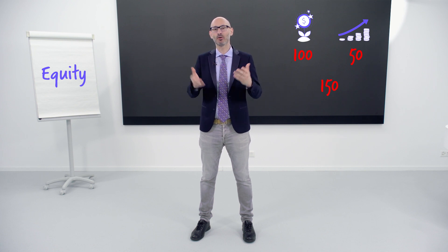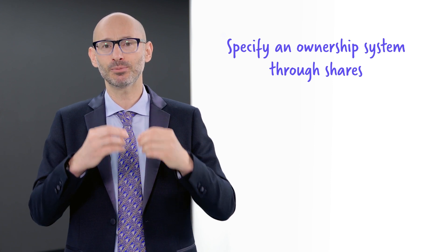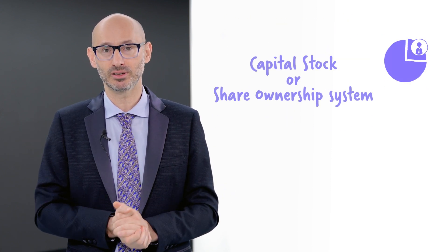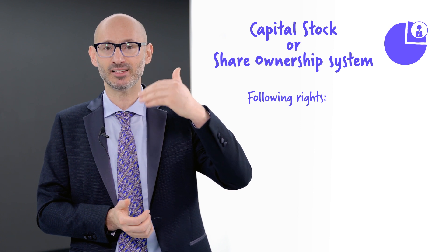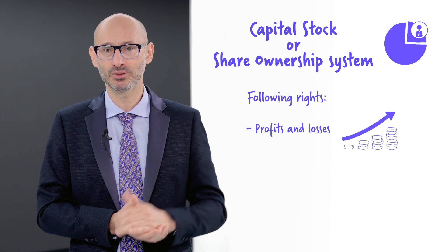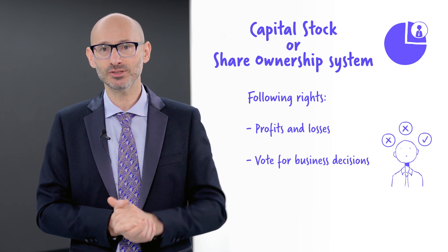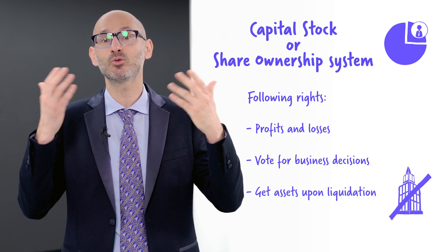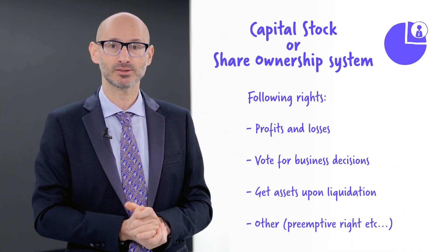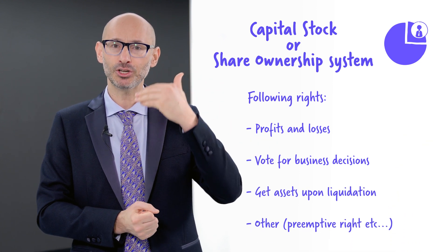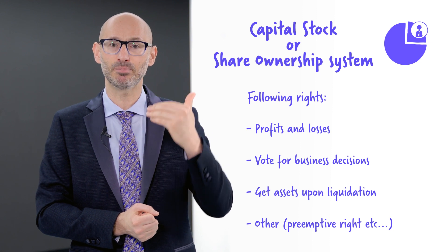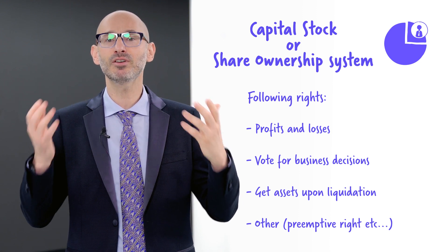This video is even more boring than the previous ones, sorry, because there's a bunch of legal concepts on top of the accounting ones. In most of the modern world, registering a company with the government means you have to specify an ownership system through shares. Such shares give you access to profits, to vote for business decisions, and to get assets upon liquidation, among other things. The share ownership system is how companies are set up even within families.